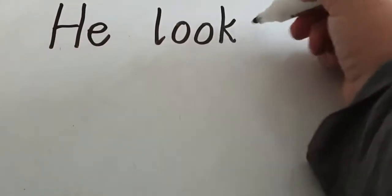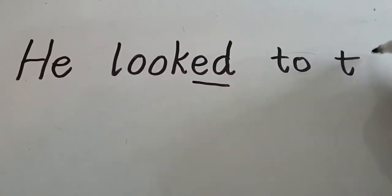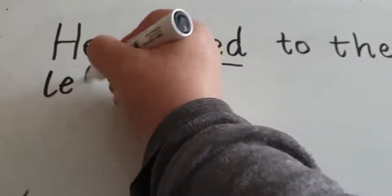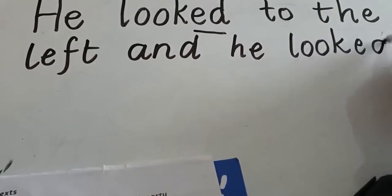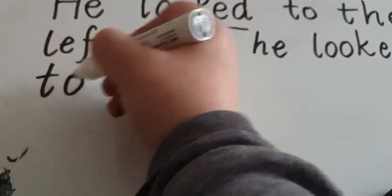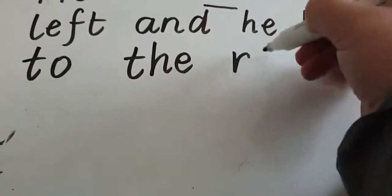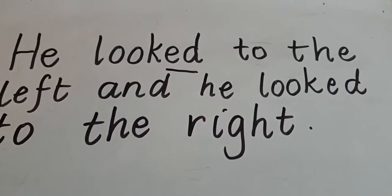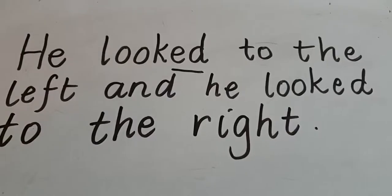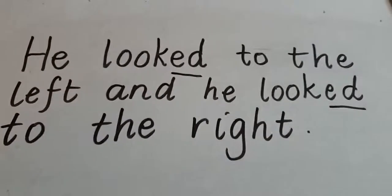Let's have a look at what you should have for your sentence, remembering of course that it starts with a capital letter. He looked. It sounds like a T sound but it's actually E-D. He looked to the left, and he looked to the right. I'm looking for capital letters at the start, full stop at the end, and it's this bit that we need to remember.